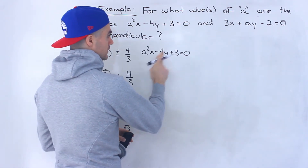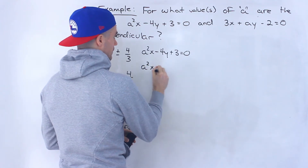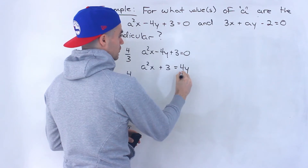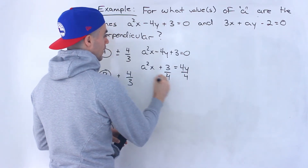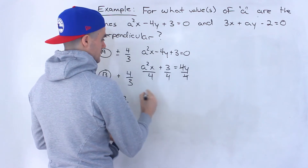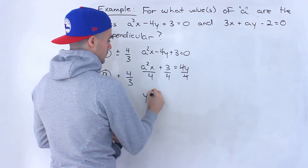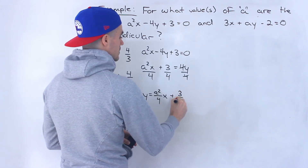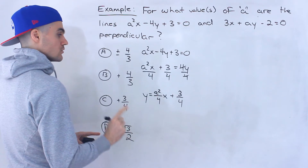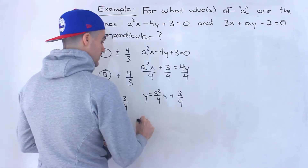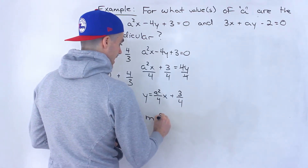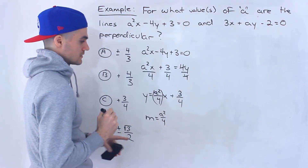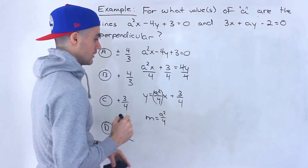Starting with the first line, we want to isolate for Y. So I'll bring the negative 4Y over — that'll become positive 4Y — then divide everything by 4. So Y equals A squared over 4 times X plus 3 over 4. The slope of this line is A squared over 4 — that's the M in front of the X.